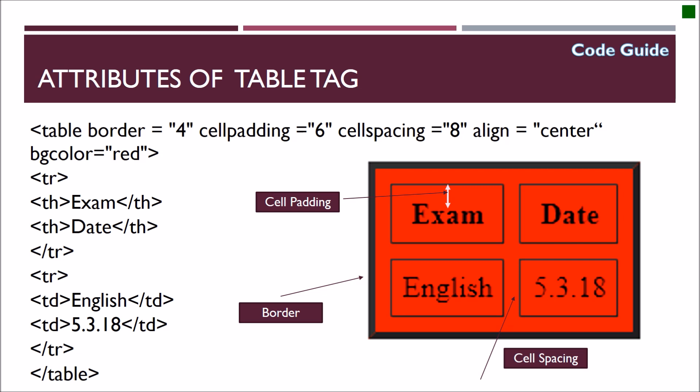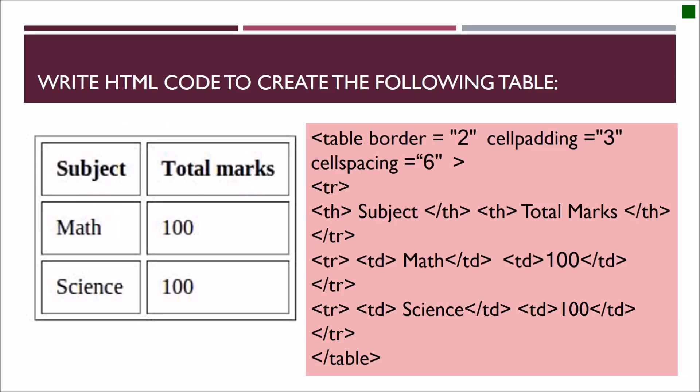So here two rows are given. First is the heading, exam date. So we took this as th and slash th. Next one is for English and the date. These are the two columns. So we took this as td. The outline is the border of the table and inner side cell padding and cell spacing is specified. Children don't get confused between cell padding and cell spacing. Cell spacing is distance between two cells. Cell padding is distance between the cell wall and the content.